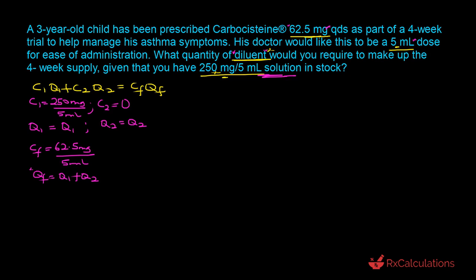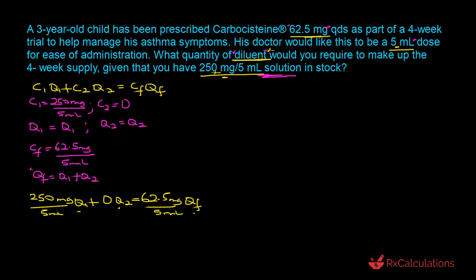Substituting: (250 mg / 5 ml) × Q1 + 0 × Q2 = (62.5 mg / 5 ml) × Qf. You'll notice that even though zero times Q2 equals zero, you still end up with one equation and two unknowns — Q1 and Qf. There's a smart way around this, which I want to show you in the next step.